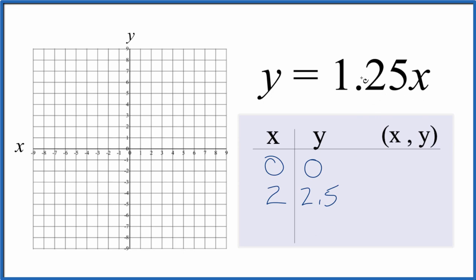And then how about we say negative 2. Negative 2 for x times 1.25, that's negative 2.5. So these are the points that we'll graph for the equation y equals 1.25x.